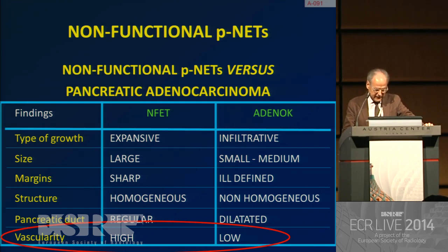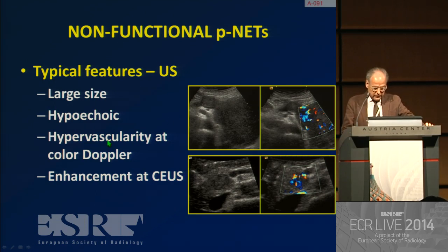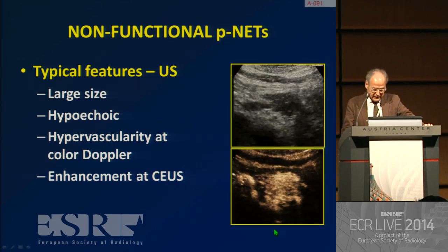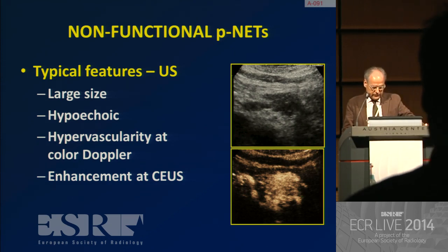Vascularity is probably the most important imaging finding to make the differential diagnosis between non-functional PNETs versus pancreatic adenocarcinoma. It is typically elevated in case of this tumor, low in cases of adenocarcinoma. At ultrasound, we will see relatively large masses, hypoechoic, with hypervascularity that can be demonstrated already at color Doppler, but can be better demonstrated with contrast-enhanced ultrasound. With contrast, you see a definite increase of the vascularity of this pancreatic mass, which is typical for this type of tumor.